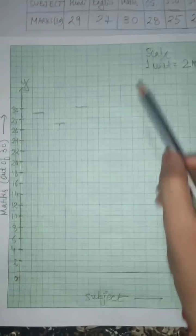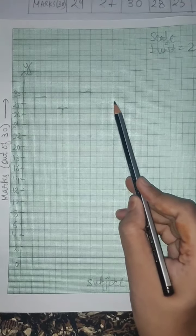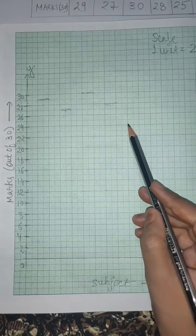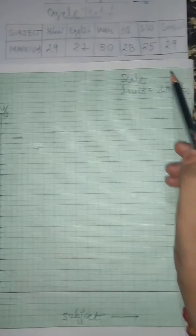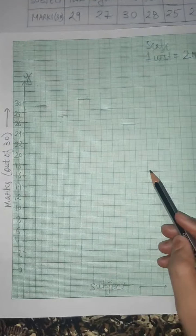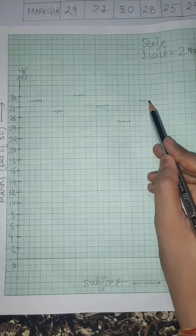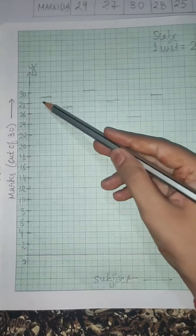So our 28 will come here. Then 25, Social Science. So where do we go? This is 24, so this is 25. And then last is 29. So this is our 29, 28 from just 2, 29. And here we will make our bars.